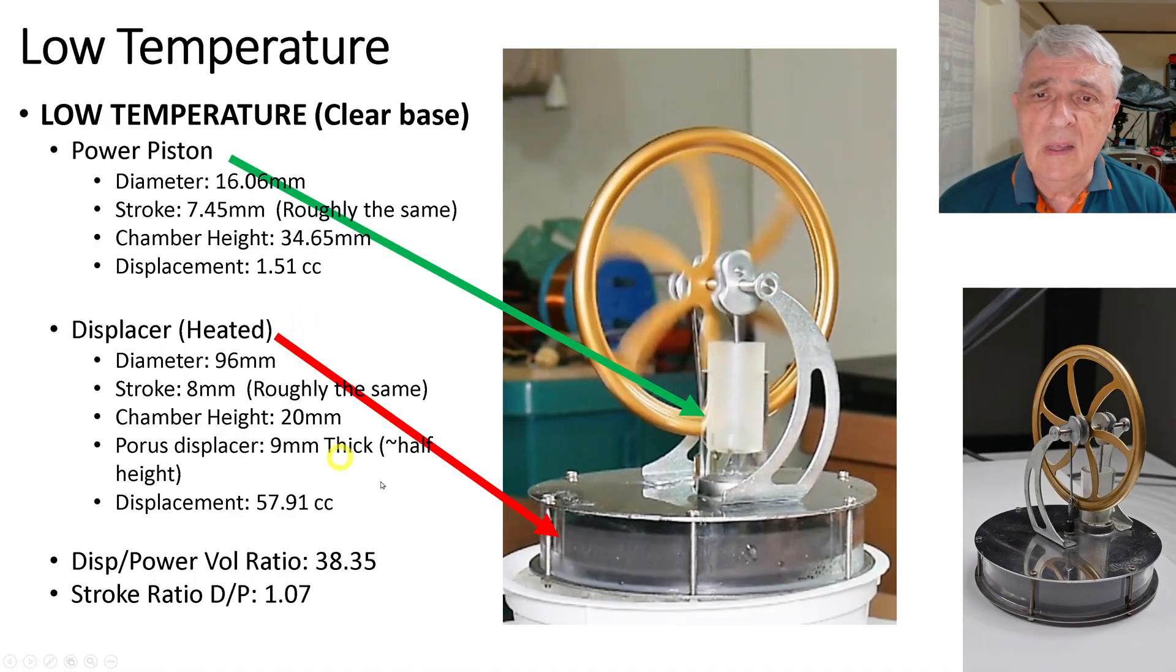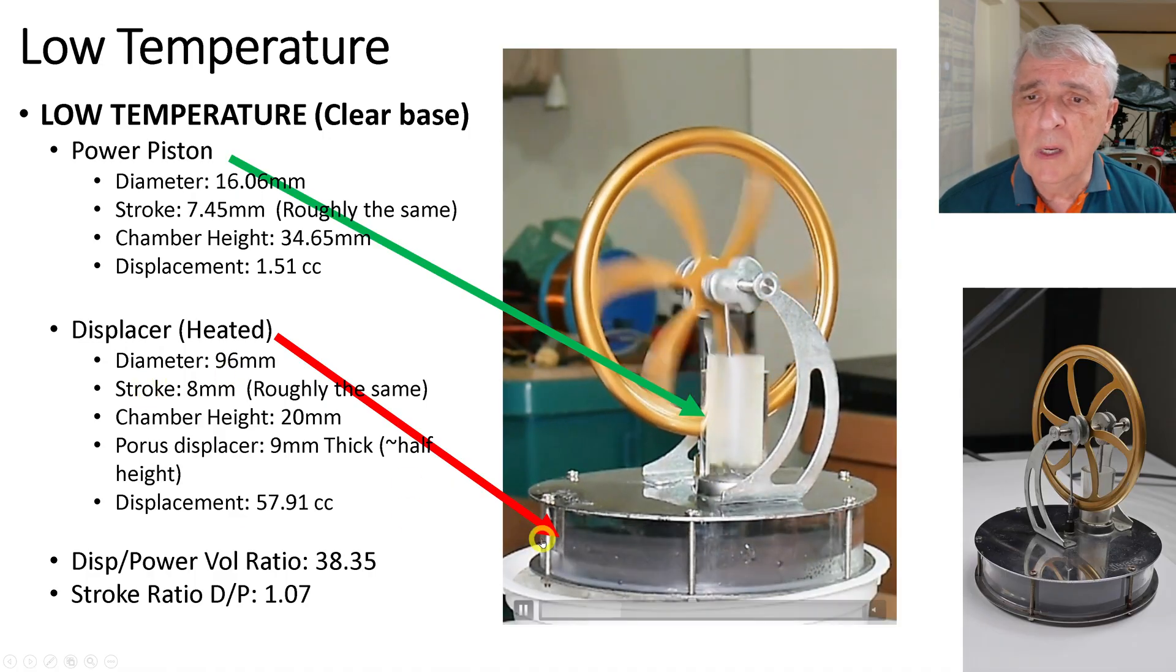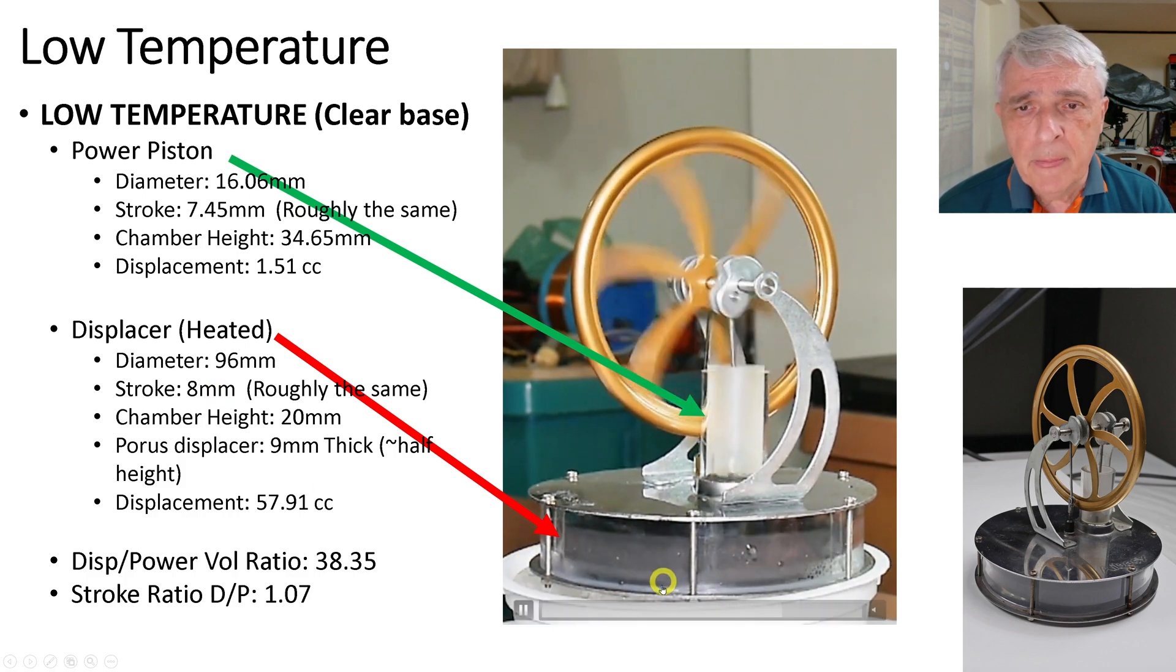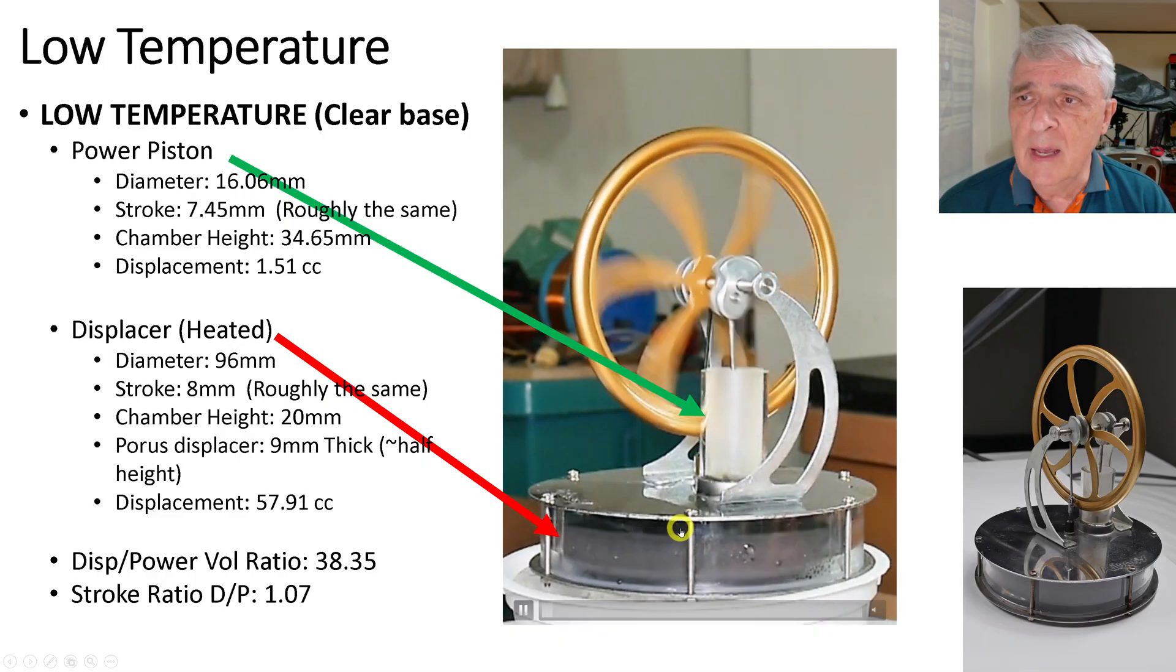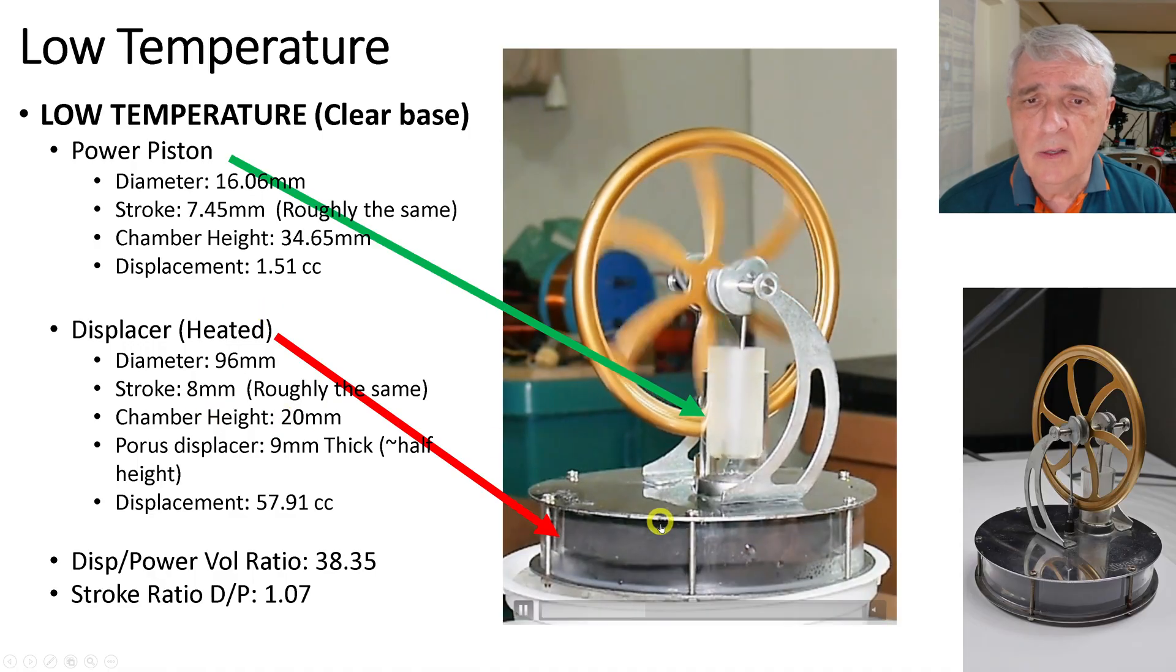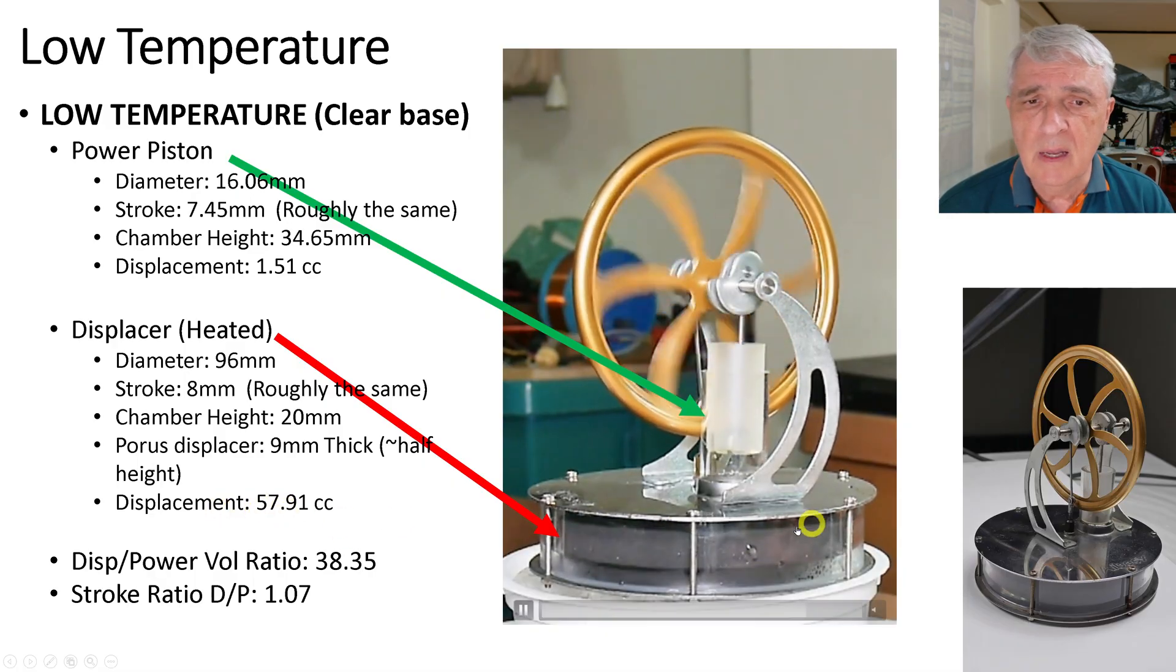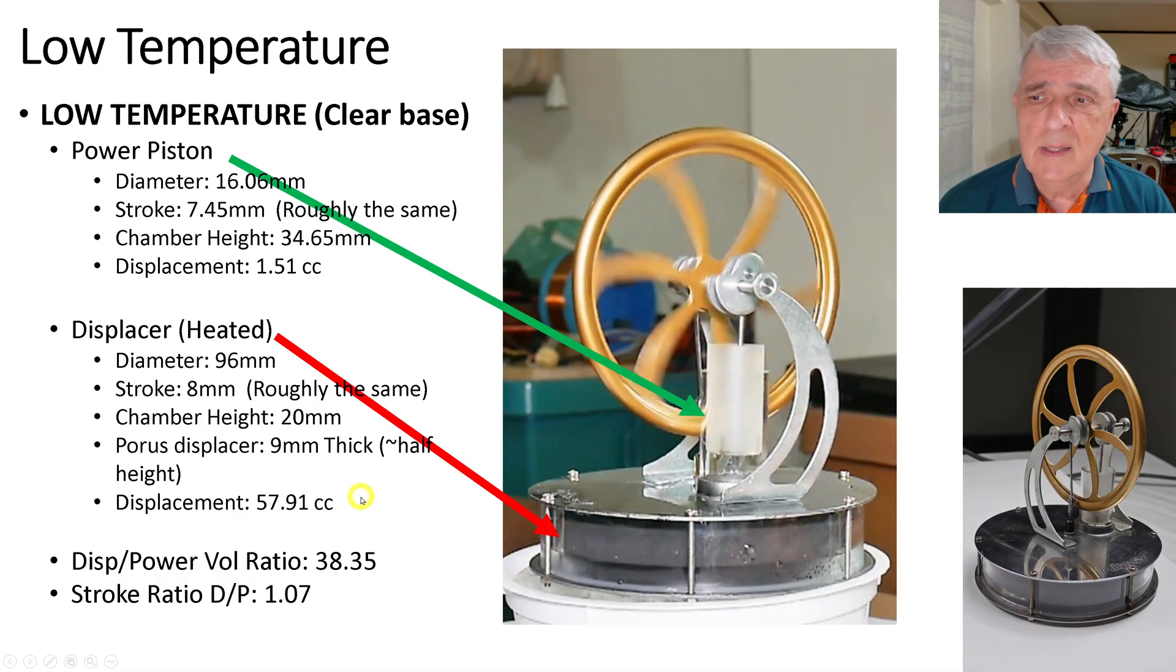The displacer is the heated chamber, and the diameter of this one is 96 millimeters across this way. The stroke is 8 millimeters. You can see the shaft in the back and this displacer moving up and down, which is roughly the same as this. The chamber height is 20 millimeters. The displacer is 9 millimeters thick, and the displacement of the volume in the chamber is 57.91 cc's.